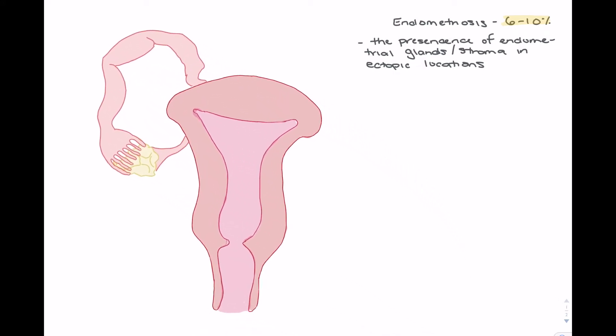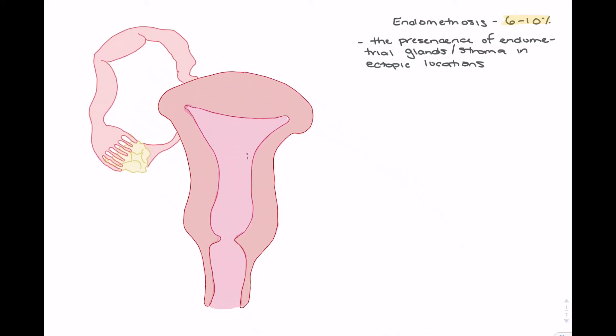Endometriosis occurs in about 6-10% of females of reproductive age and can account for a number of pathologies associated with menstruation, abdominal pain, and infertility. We'll start by taking a look at the endometrial tissue itself and the histology of this tissue, and then start by looking at where these cells can actually begin to reside.